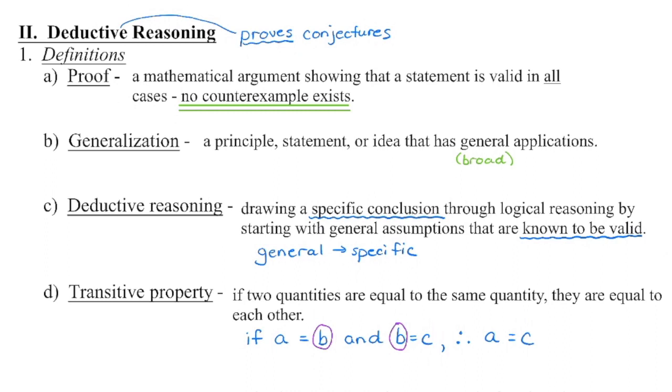Conjectures can be produced using inductive reasoning, but in order to prove a conjecture, we need to move to deductive reasoning. A proof is something where there is no counterexample. So with inductive reasoning, there could potentially be an example out there that would disprove a conjecture, not the case with deductive reasoning. So it's a way of showing that your conjecture is true in all cases.